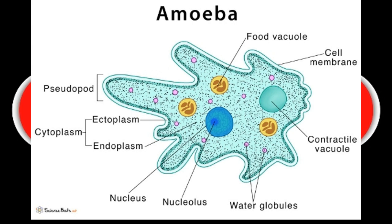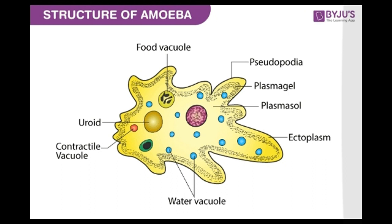In the next chapter on microorganisms, you will learn how to observe permanent slides of amoeba, paramecium, chlamydomonas, and spirogyra. These permanent slides of microorganisms will be shown in that chapter.